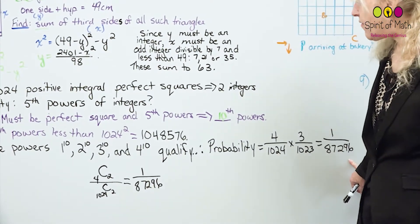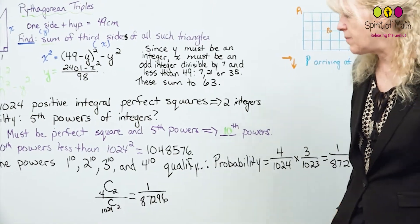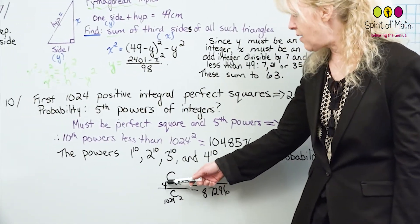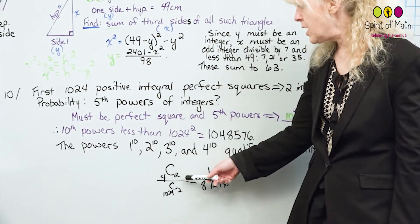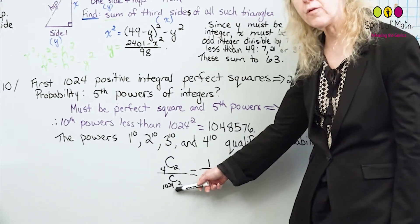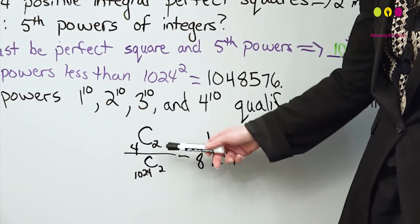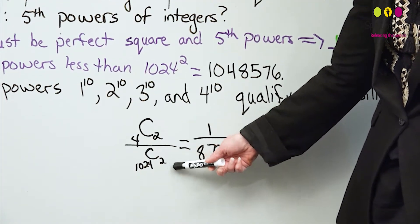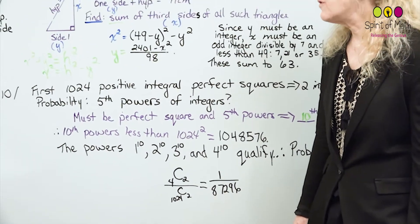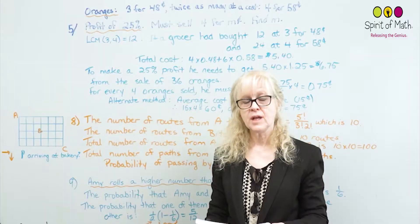An alternative option: if you know choose notation, you could say 4 choose 2 — you have four numbers and you're choosing two — over a total of 1024 choose 2. That gives you the probability as the number of possibilities over the total. Either method gives the same answer. Those are the first three problems; now let's do the next three in the reduced bank.